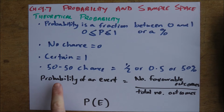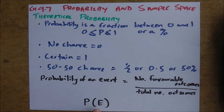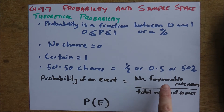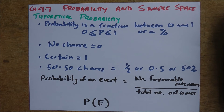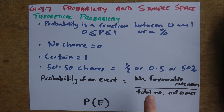When we work out the probability, we talk about the probability of an event, written as P(E). P stands for probability, we have brackets, and inside the brackets goes whatever we're looking at — for example, the probability of winning the Powerball lottery. We work it out using: number of favourable outcomes divided by the total number of outcomes. The total number of outcomes is the total number of possible results — for a coin it's head or tail; for a dice it's 1, 2, 3, 4, 5, and 6. The favourable outcomes are the ones we're looking for.